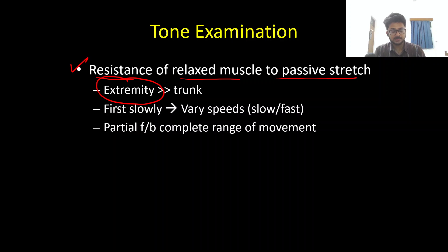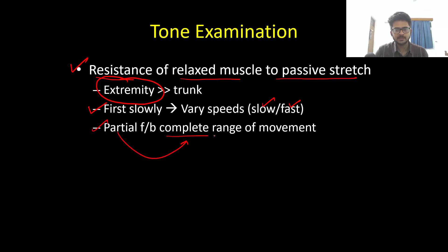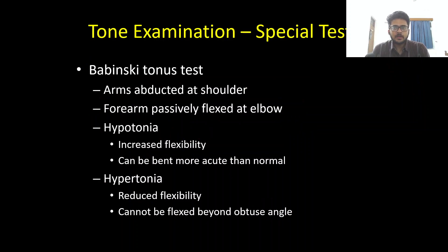We're going to examine tone in the limbs. First, when you examine the tone, you have to do it at a slow speed or slow velocity, after which you take varying speeds — both slow and fast movements. Before checking the complete range of movement, first move the joint in the partial range of movement, and after that you can go ahead and examine tone at the complete range of movement.